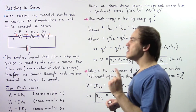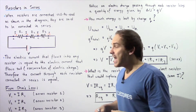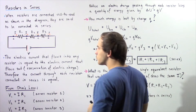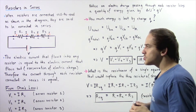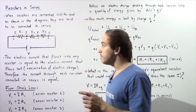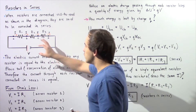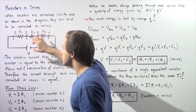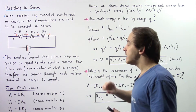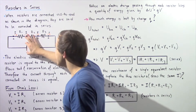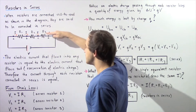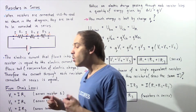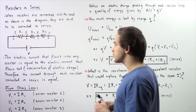A battery essentially creates an electric potential difference, and as a result of that electric potential difference between the two ends of our battery, electric charge will flow. Our positive electric charge will begin on the positive electrode, will travel in the following direction through the resistors, and will end up at the negative electrode. That basically means the electric current will begin on the positive side, will flow through the resistors, and end up on the negative side.